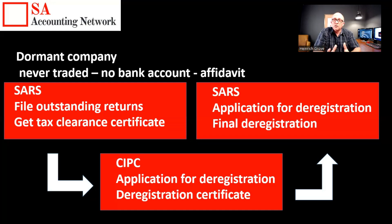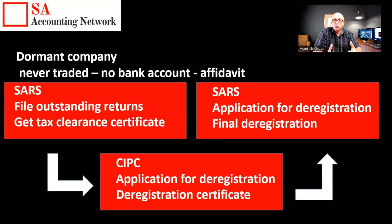Since 2019, they've actually made this a more formal process. In the past it was just an automatic thing — leave it and it disappears. Now they want proof that the business is not trading and that you're going through a process of deregistering the company. One of the reasons I assume they're doing this is that the receiver of revenue is looking for money — government hasn't got any money anymore. So this is a soft target; they can just give these guys penalties for not submitting outstanding returns.